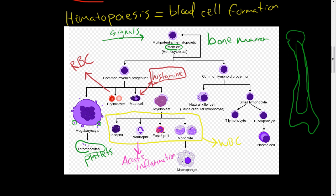The eosinophil we'll talk about next in chronic inflammation. The monocyte, if you had it in a blood vessel, would diapedize out of the bloodstream and turn into a macrophage. These macrophages sit outside of blood vessels all over your body, acting as sentinels or watchguards for any problems that arise in the tissues.